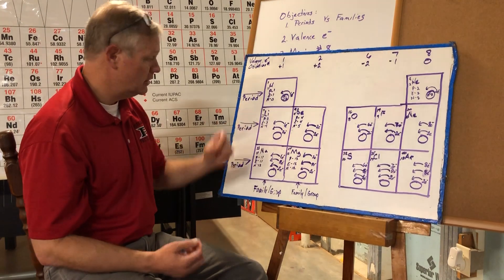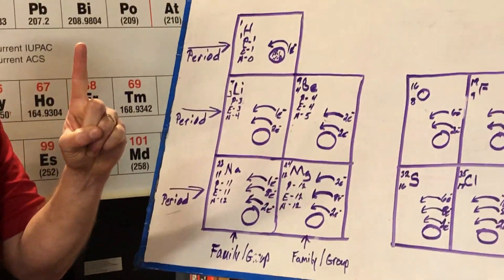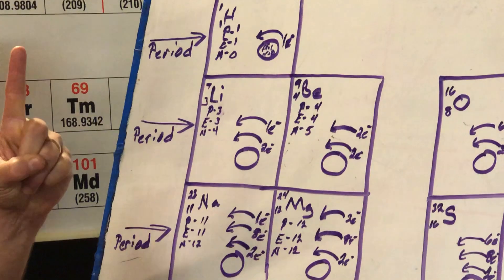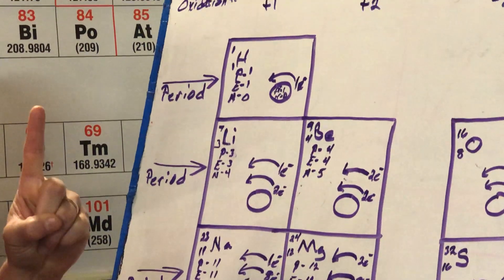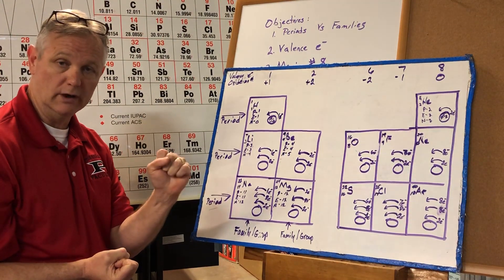Is it easier to gain seven, that would be seven units of energy, or to lose one? And if I lost one, that's only one unit of energy. So it's easier to lose that one electron.